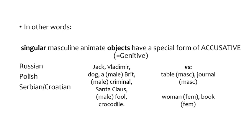So Jack, Vladimir, dog, a male Brit, a male criminal, Santa Claus, male fool, and crocodile will all have this special accusative form that is syncretic with genitive in all three languages. This distinguishes these masculine animates from the inanimate masculines like table and journal.